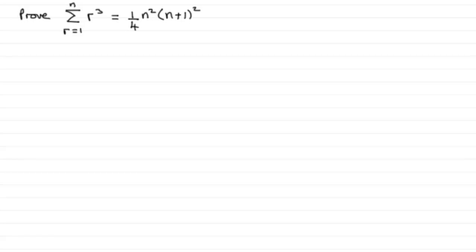Here I have another example in my series of proof by mathematical induction, where we've got to show that the sum of r cubed going from r equals 1 to r equals n is equal to a quarter times n squared times n plus 1, all squared. To do this in the usual way, what we need to do is show that it's true for when n equals 1 as the first step.